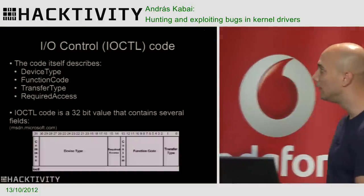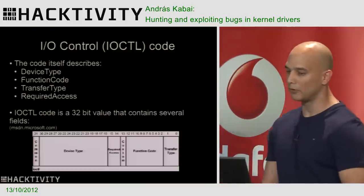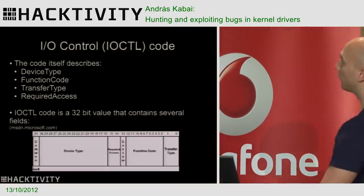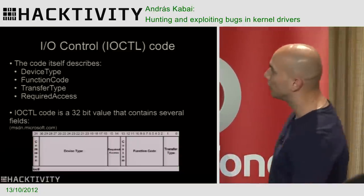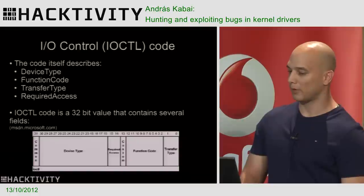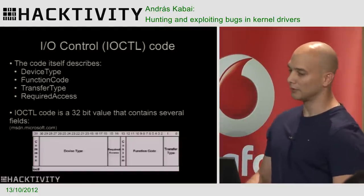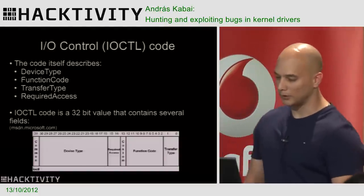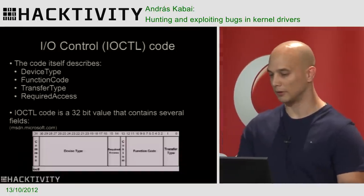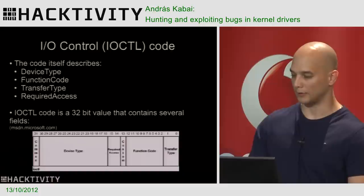The IRP packet includes an IOCTL code. The IOCTL code describes many things — device type, function code, transfer type, required access — but most importantly, the IOCTL code targets a specific function in the kernel driver. So if you want to call a function in a kernel driver, you need to target it with the correct IOCTL code.